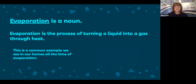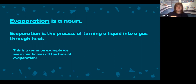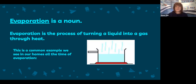Evaporation is also a noun. We looked at evaporation in our water cycle experiments. Evaporation is the process of turning a liquid into a gas through heat. Remember when we took our cup of water and put it in a sunny window? The warmth from the sun turned the liquid into a gas so that the level of our liquid continued to go down as the liquid was warmed. Watch the next time your mom is cooking something on the stove or boiling a pot of water to make pasta — you will notice the steam or vapor coming off the pot. This is an example of evaporation.